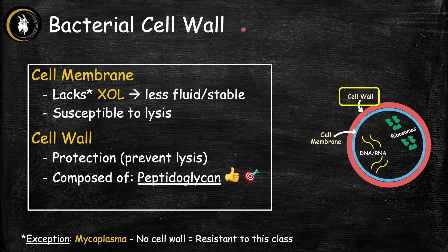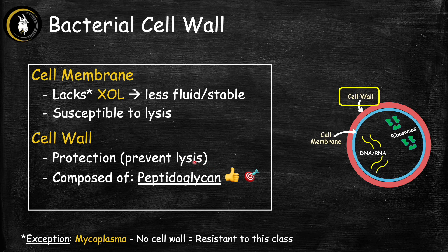To build a good antibiotic, we first have to know our enemy. Just like our cells, bacteria also have a cell membrane, but the key difference is that their cell membrane doesn't have cholesterol, which makes it less fluid and more susceptible to lysis. To prevent this, bacteria have built a fort around their cell membrane — that's the cell wall — which protects the cell membrane and prevents lysis. One exception is mycoplasma, a common cause of walking pneumonia, which has no cell wall because its membrane contains sterols. Since it has no cell wall, it's resistant to cell wall inhibitors — that's high yield.